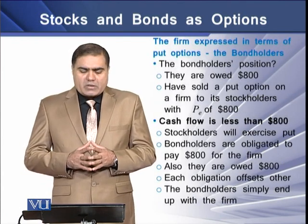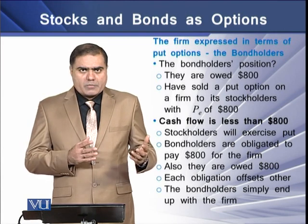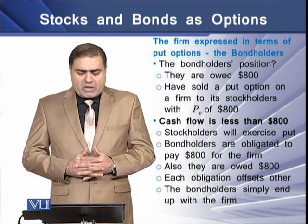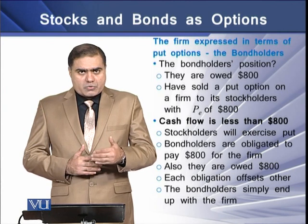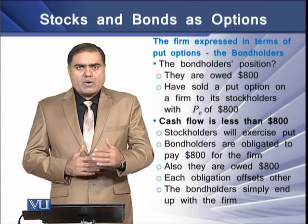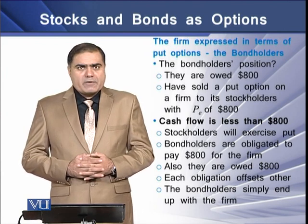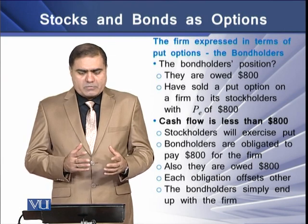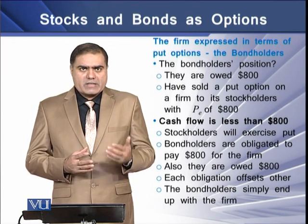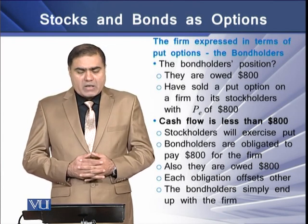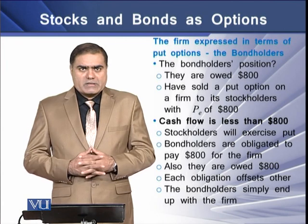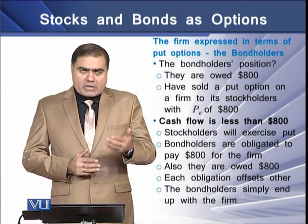Now let's see the firm expressed in terms of a put option with reference to the bondholders, and what will be the position of the bondholders. They are owed $800 from the firm or the stockholders of the firm. They have sold a put option on this firm to the stockholders against an exercise price of $800. Now if the cash flows of the firm are less than $800, the stockholders will exercise their put option.